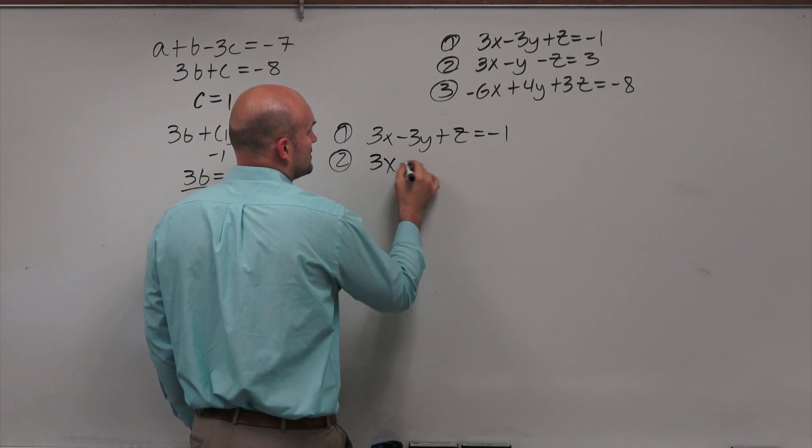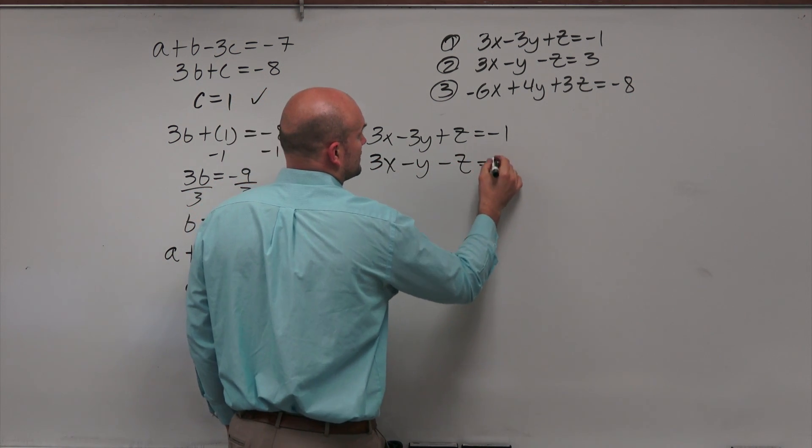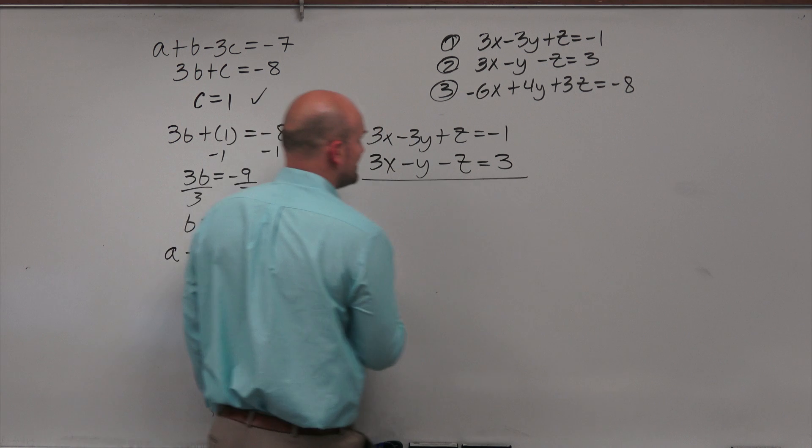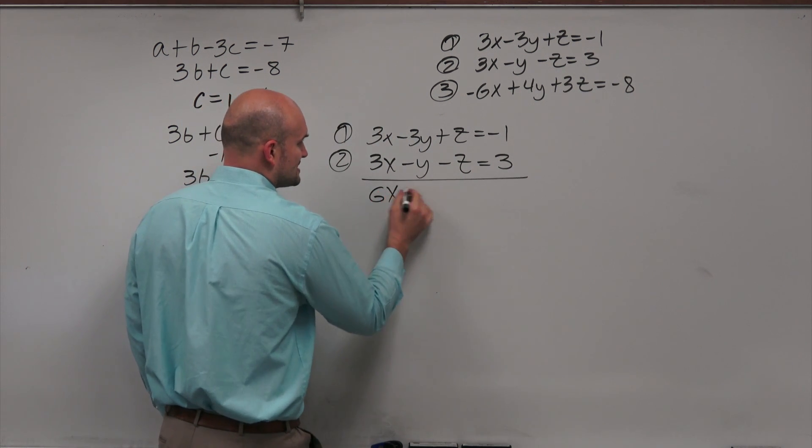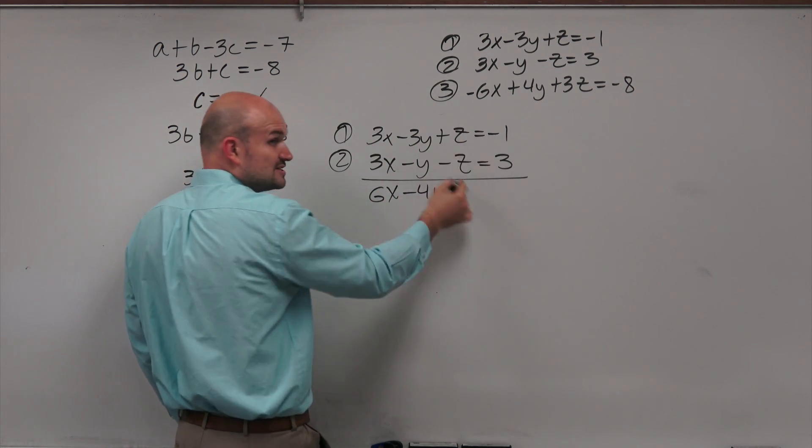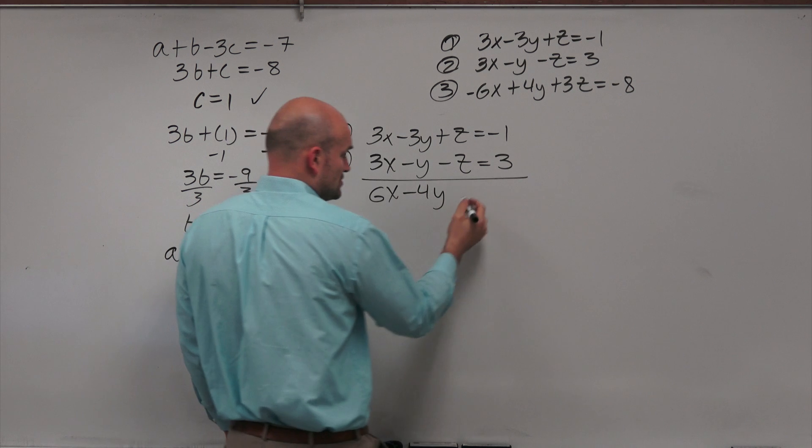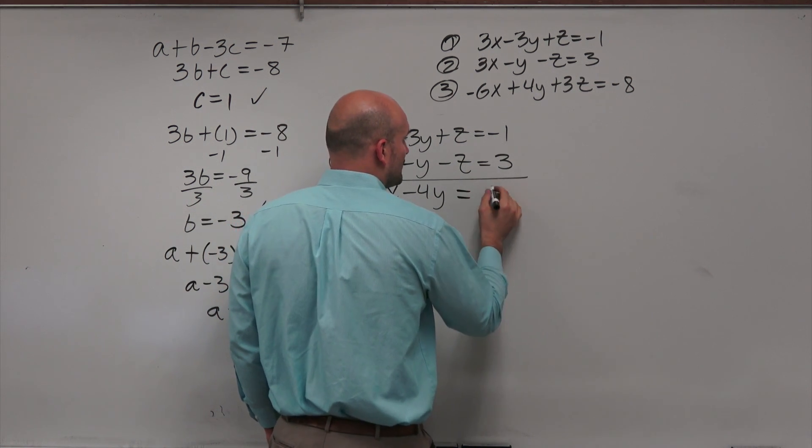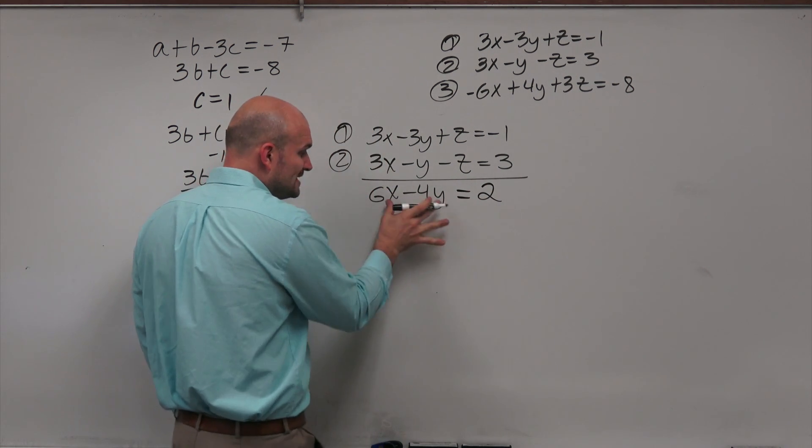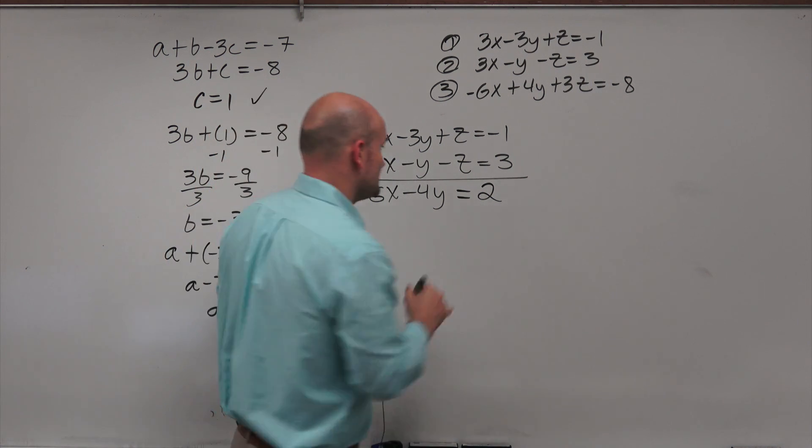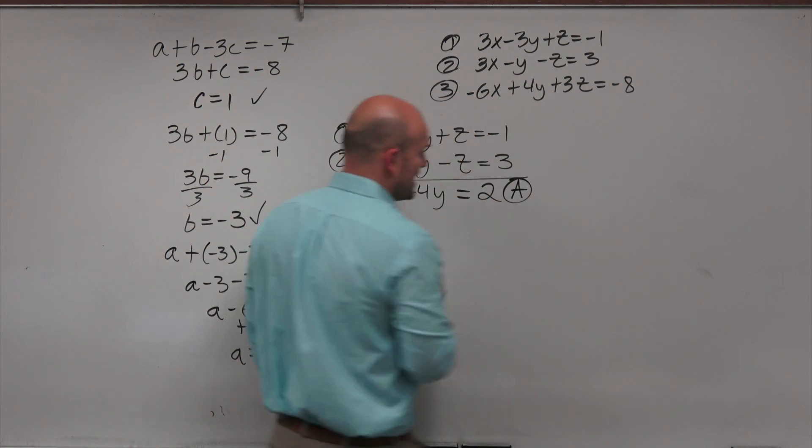So what I'm going to do to make this a little bit easier is I'm going to organize these as equation 1, 2, and 3. So if I take equation 1 and equation 2 and I add them together, that will eliminate my variable z via elimination. So I have 3x minus y minus z equals 3. Now what happens when I add these together? I get a 6x minus 4y. This goes to 0z, which means it goes away. And then therefore, this is going to be a 2. Now this equation only has terms of x and y. I like that. I'm going to call that equation a.